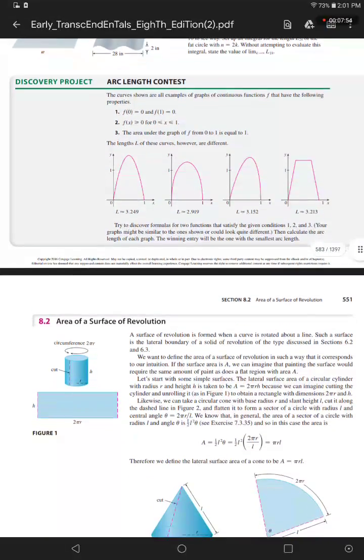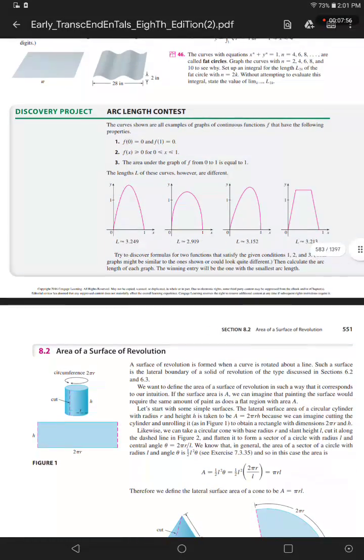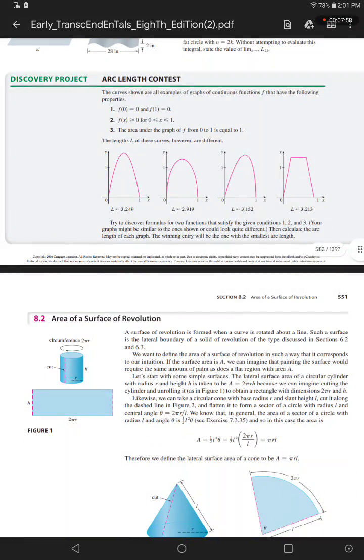Discovery Project: Arc Length Contest. The curves shown are all examples of graphs of continuous functions f that have the following properties. 1: f of 0 equals 0 and f of 1 equals 0.